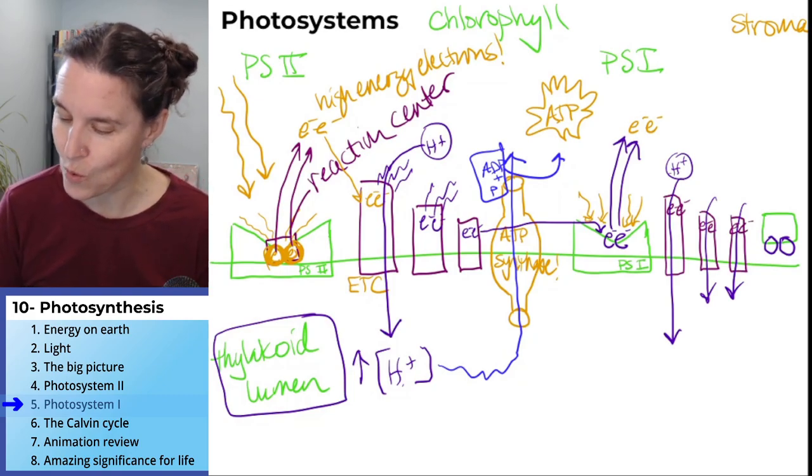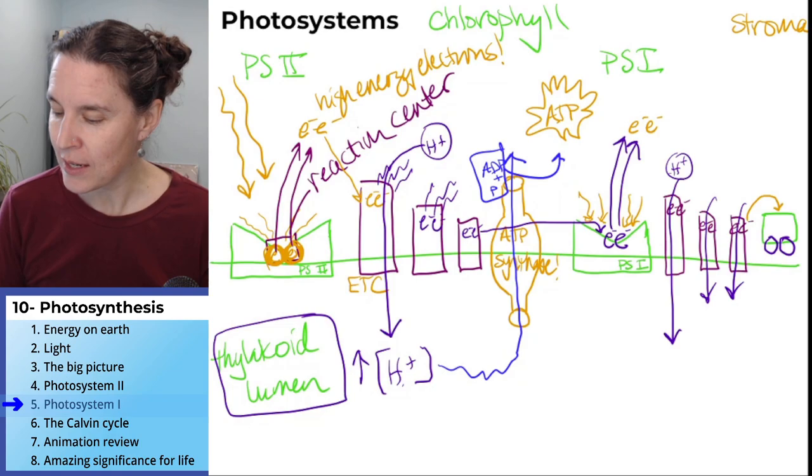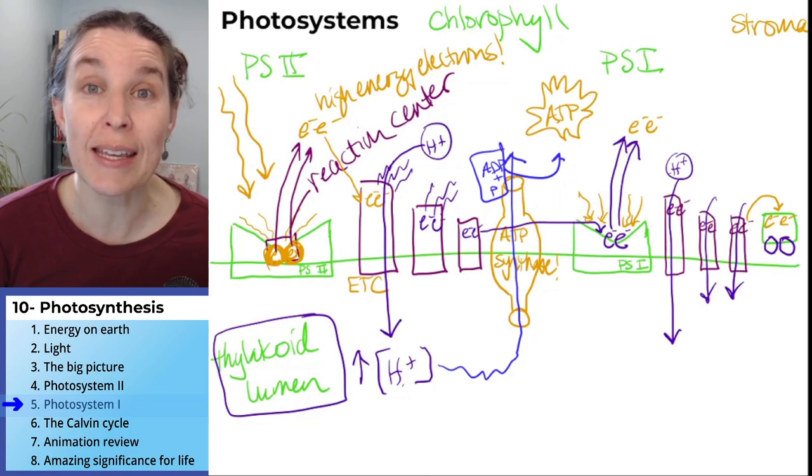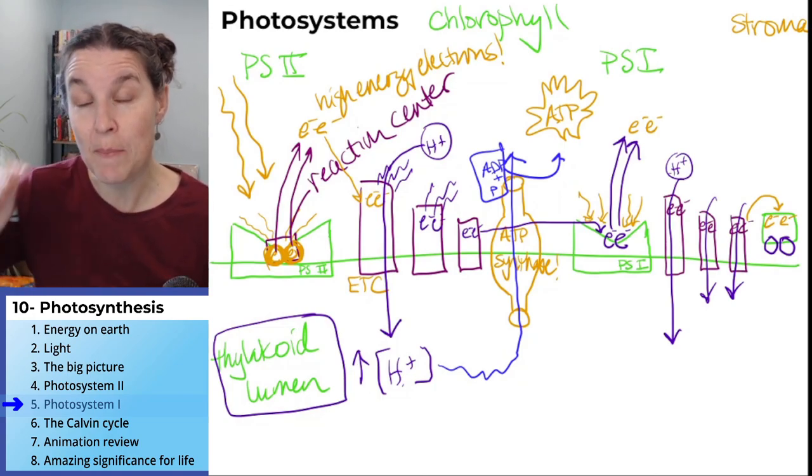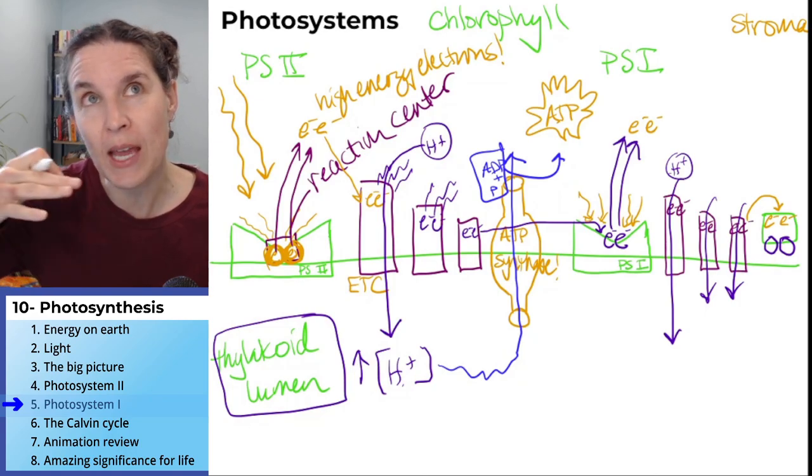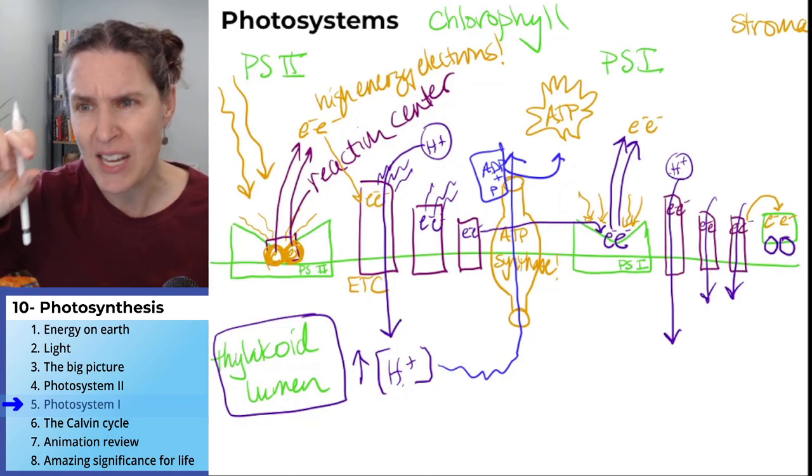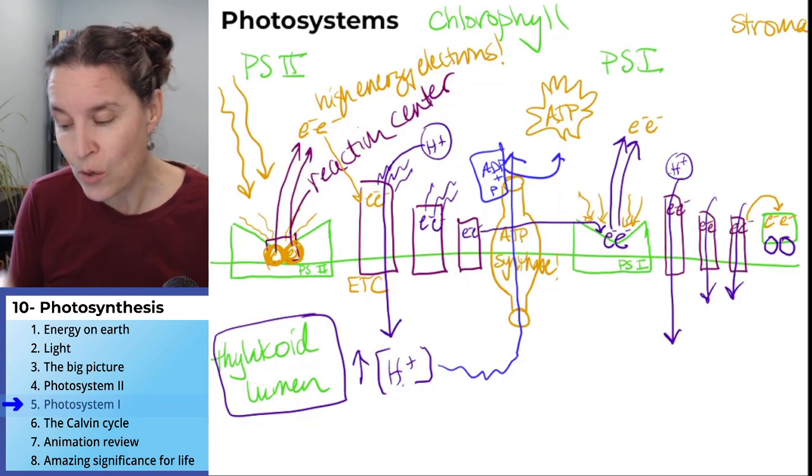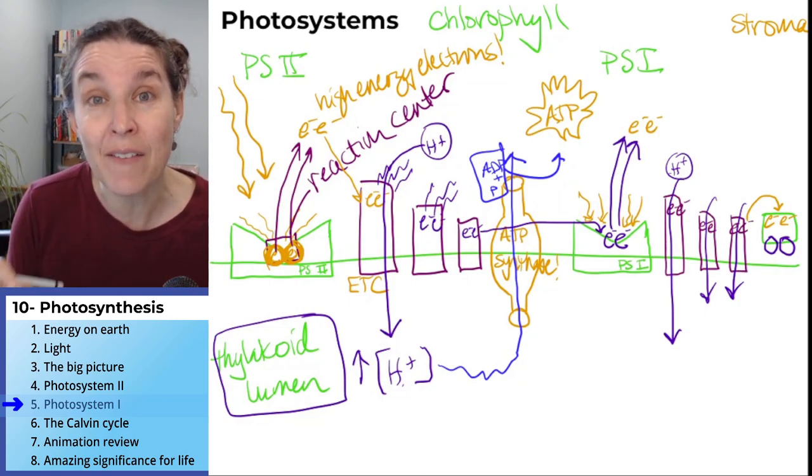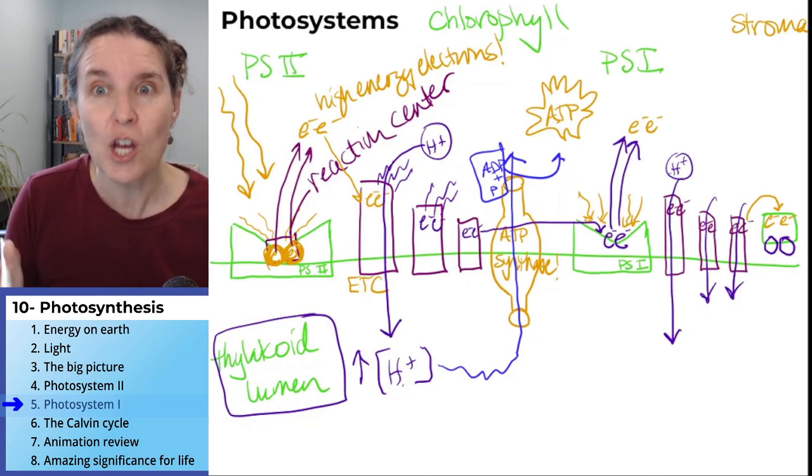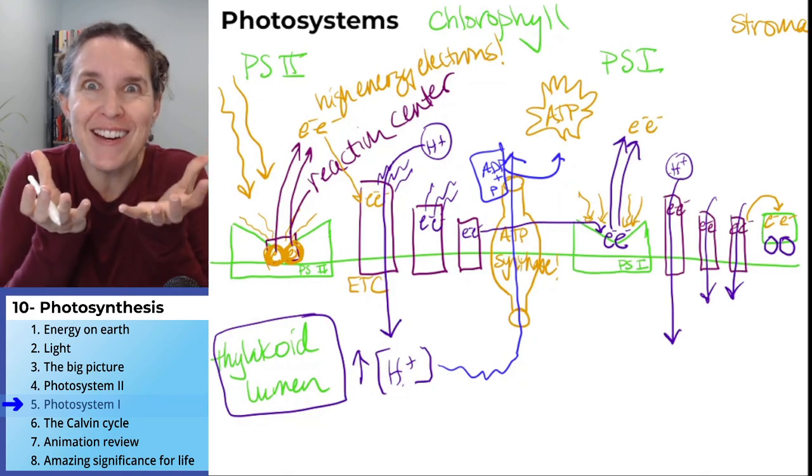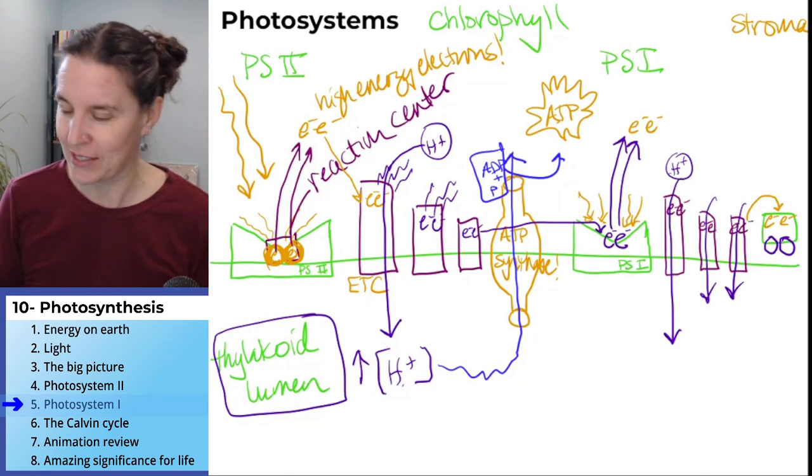True story: the electrons get dumped into a high energy electron carrier. Those electrons that passed all the way through from the energy of the sun and passed all the way through the electron transport chain - those electrons from photosystem one still have enough energy in them to be high energy electrons carried by a high energy electron carrier.